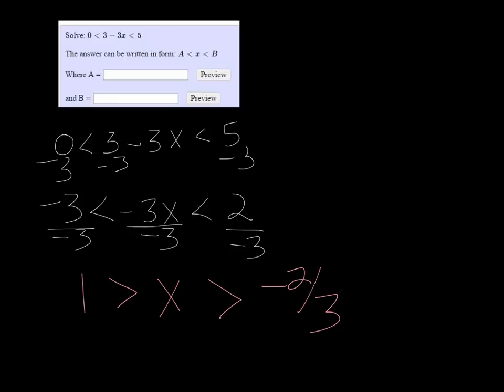We don't want to have it in this form. We need to flip it so it's from least to greatest. So we want to have it as negative 2 thirds is less than x, which is less than 1.